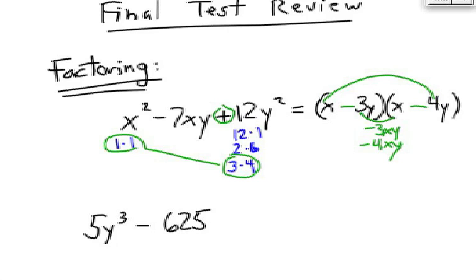Did you try the second problem? Let's take a look. I see, first of all, that I can divide a 5 out of each term, which gives me 5 times the quantity y cubed minus 125.